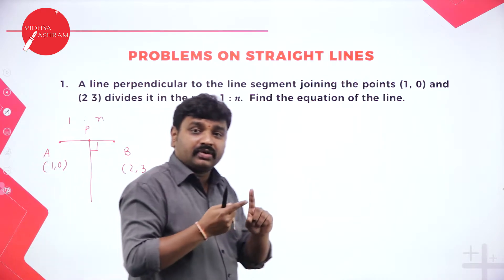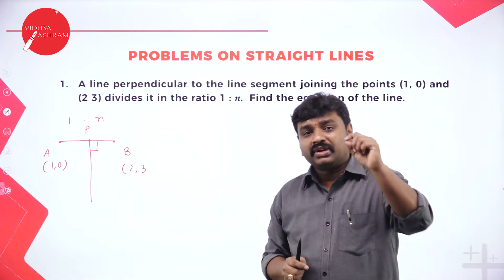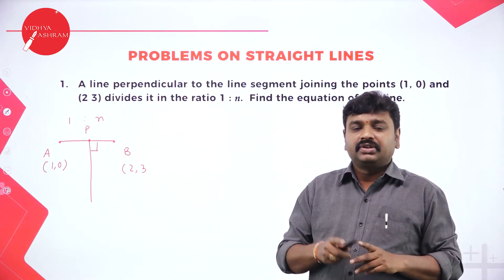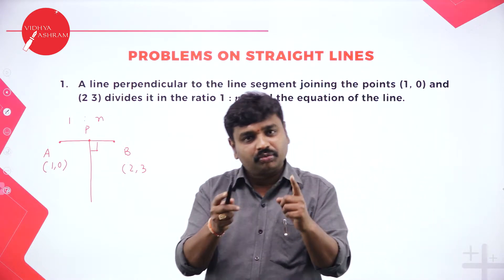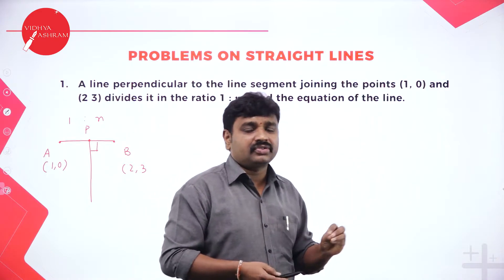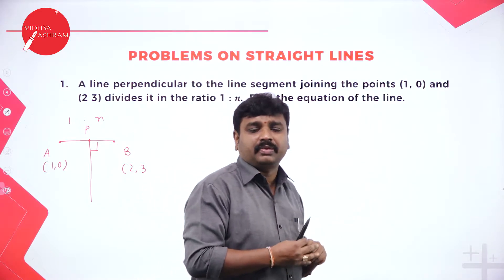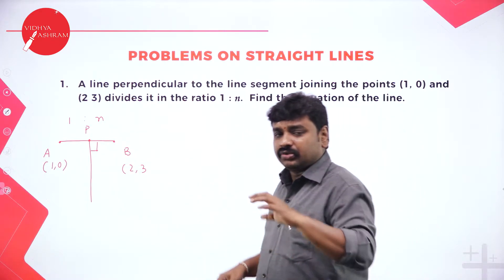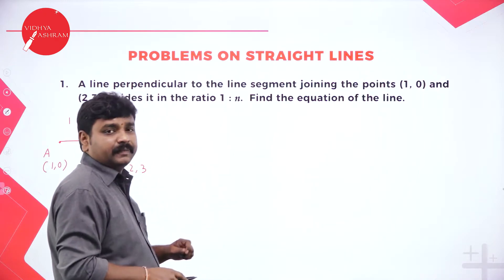Interestingly, they have not given the point or the slope directly, but we can find both. In my last class I taught you: if two lines are perpendicular, then the product of slopes is minus 1. Let me summarize the best method to solve this problem by adding up the concepts.